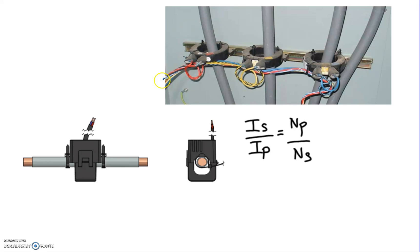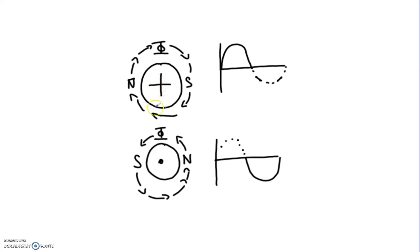So what we're actually doing, what the CT does, is it effectively reduces the current significantly to make it much smaller so we can then take the current away and put it into some form of instrumentation.